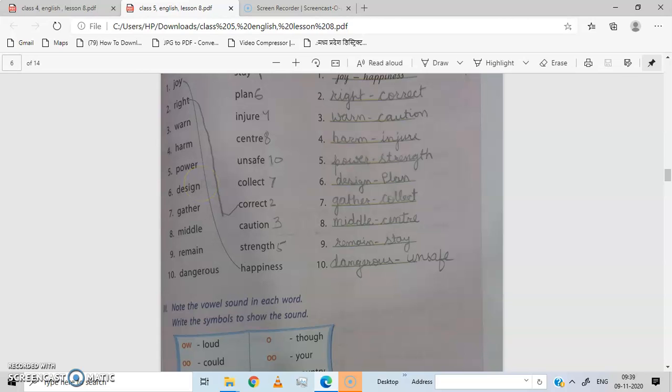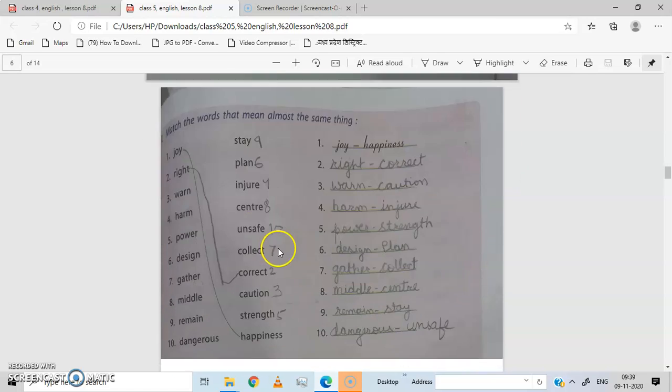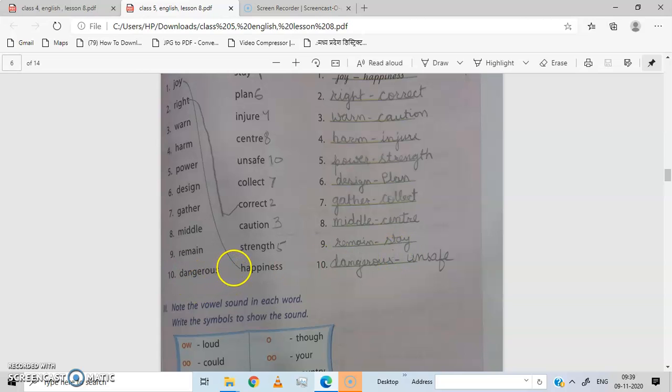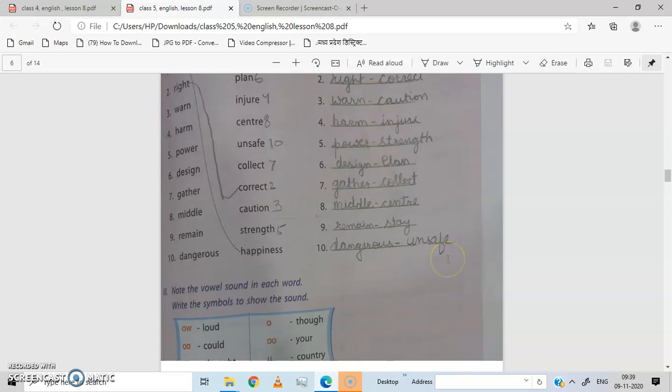Design, what else can we call design? Plan. What is the plan of the house? The design of the house. Plan, design, plan. Gather, gather means to come together, to collect. Gather, collect. Middle, middle means the center one. What will we call middle? Center. Middle, center. Remain, remain means to stay where you are. Remain, stay. Dangerous, harmful, which can cause damage, dangerous means unsafe. Dangerous, unsafe.